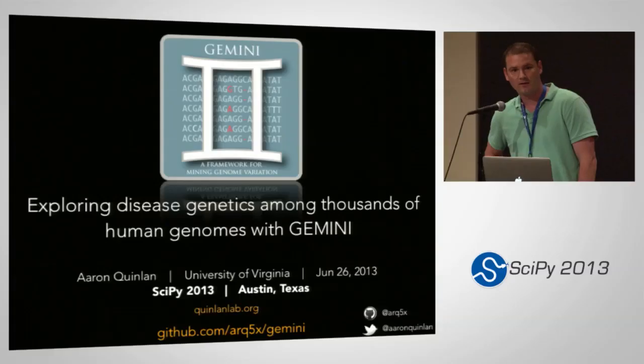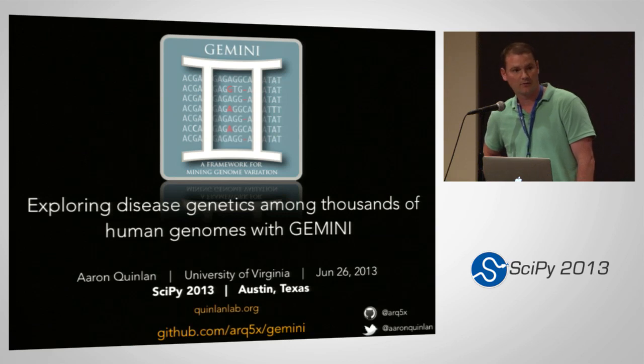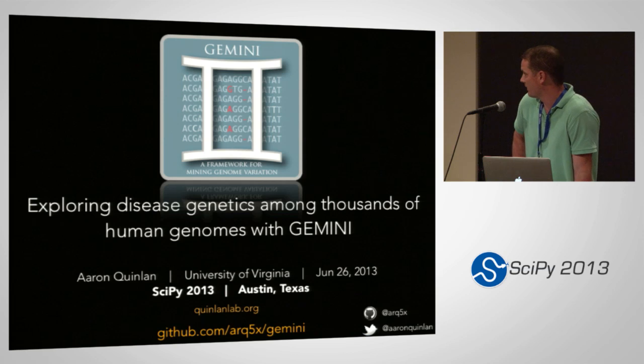Go for it, Aaron. I'm Aaron Quinlan from the University of Virginia. I lead a computational genomics lab there. In part, we use Python to read and analyze human genomes in the context of disease. The other part of my lab, we develop open source tools for working with high throughput genomic data. What I'm going to talk to you today about is a project that we've been working on for the last year or so called Gemini.